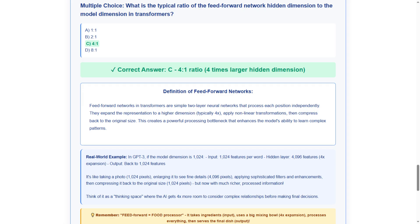The memory tip teaches us feed-forward equals food processor. It takes ingredients as input, uses a big mixing bowl for 4x expansion, processes everything, then serves the final dish as output. Remember, kitchen processing analogy.